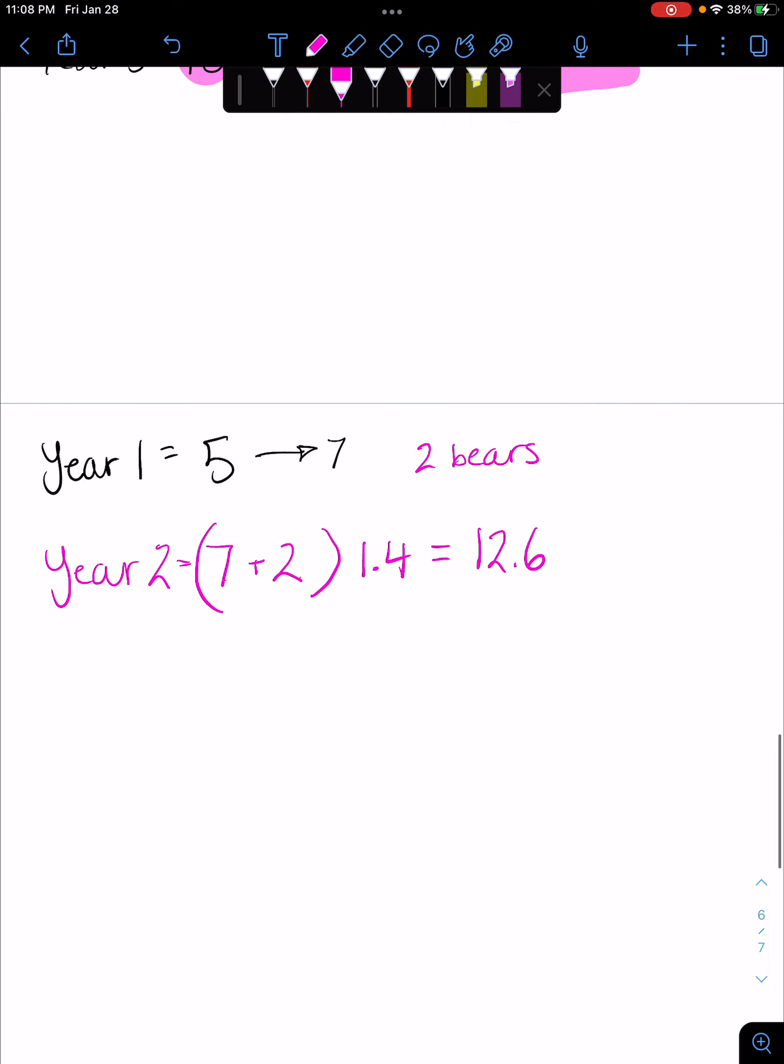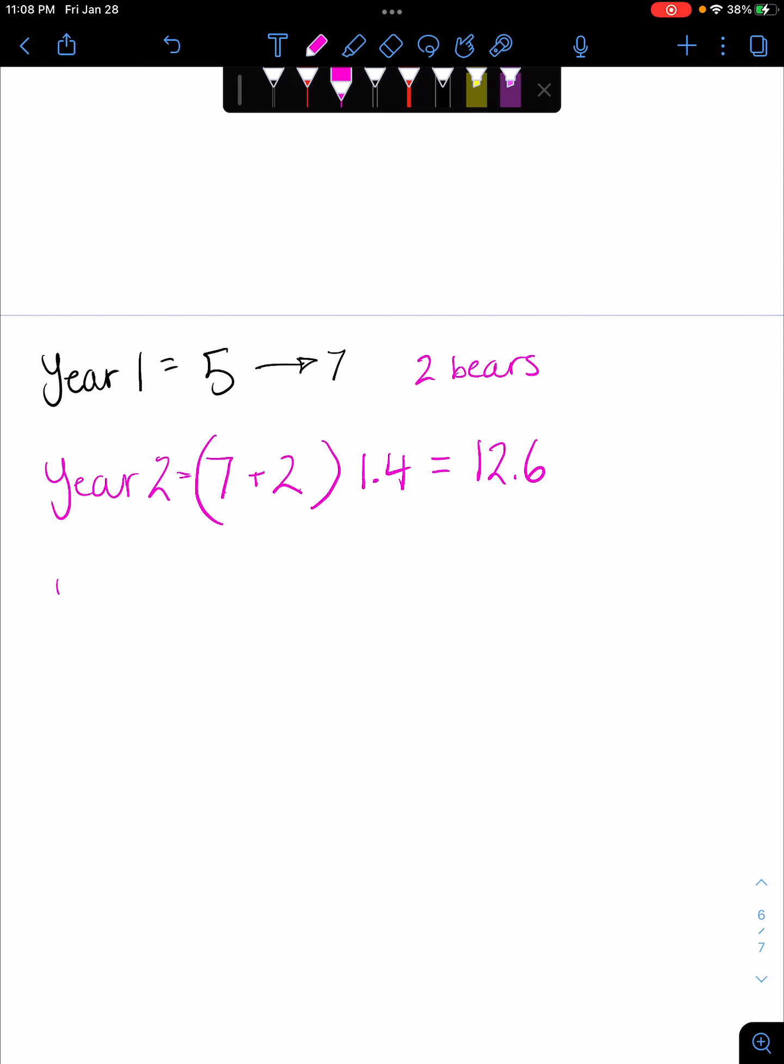Right, and then what if we add two bears again? Year three, we have - what can we do with this? We're obviously not going to have 0.6 of a bear, right? So 13 bears. Year three, 13 times - 13 plus 2 times 1.4. What is that? It is 15 times 1.4, and we have 21 bears.